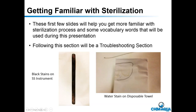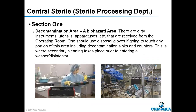Central sterile, or the sterile processing department, has three sections. First is the decontamination area — this is a biohazard area and you must have the appropriate PPE, which includes a gown, not only to protect you but to keep you from spreading germs in the facility.